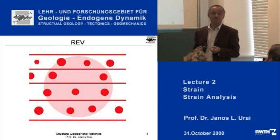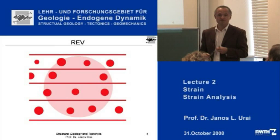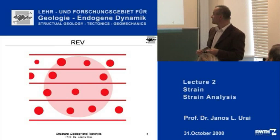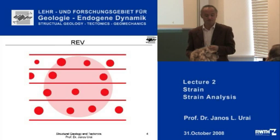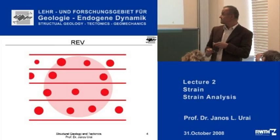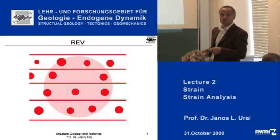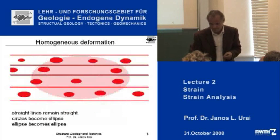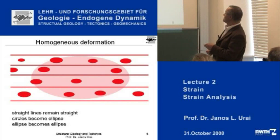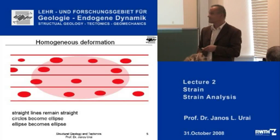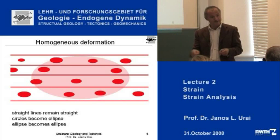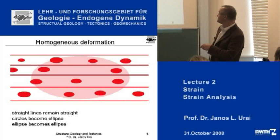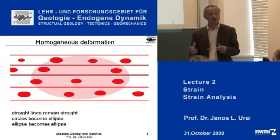How big is it? There we have a very important concept called the representative elementary volume, R-E-V. I made a simple picture with lines and circles, and now I'm going to deform this homogeneously. What you see is that every circle becomes the same ellipse. The big circle becomes an ellipse which has exactly the same aspect ratio as the small circles, and you can clearly see that this deformation is homogeneous because this is true for every ellipse.